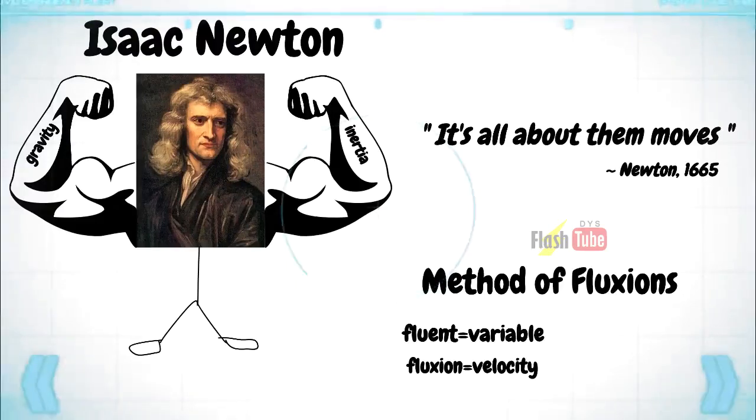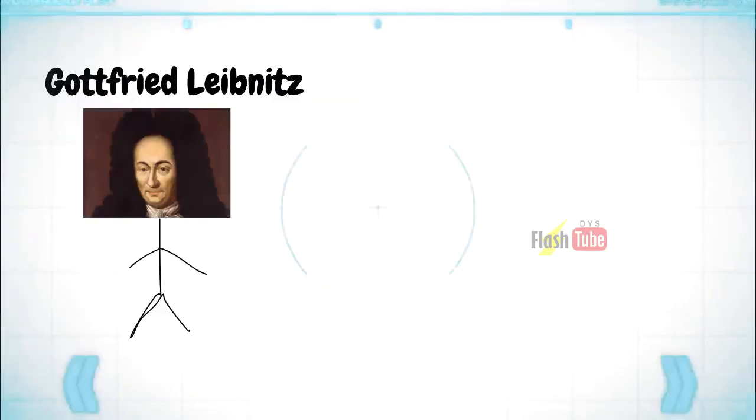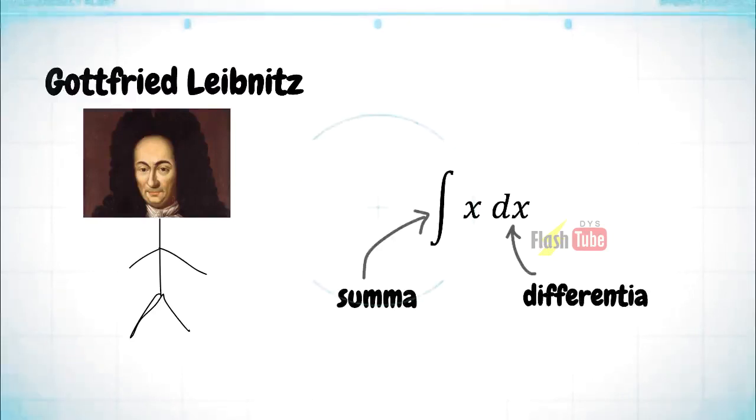While Newton thought of his calculus in terms of motion, Leibniz had a more mathematical interpretation. To him, calculus was more of sums of infinitesimal distances, the same meaning behind the notation we use today. And so most of the notation we use is actually from Leibniz.